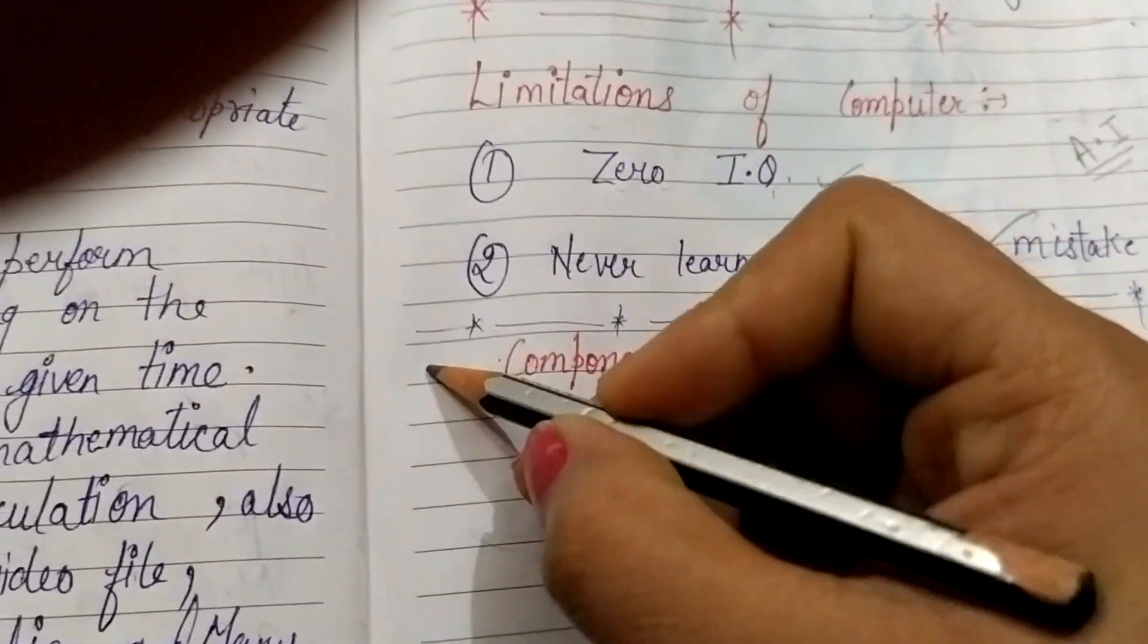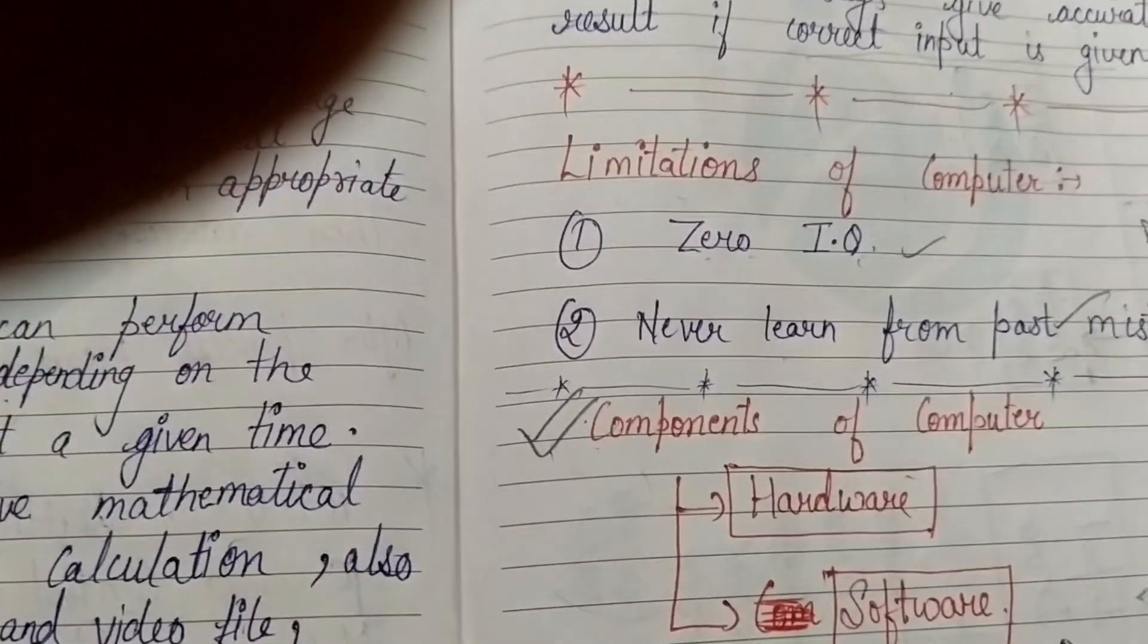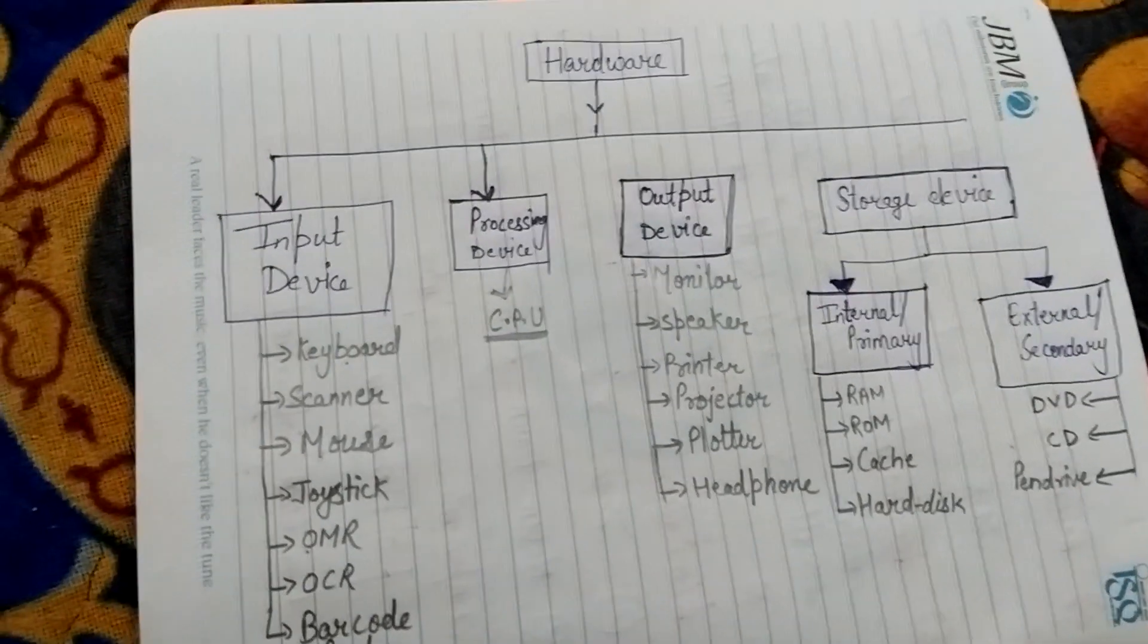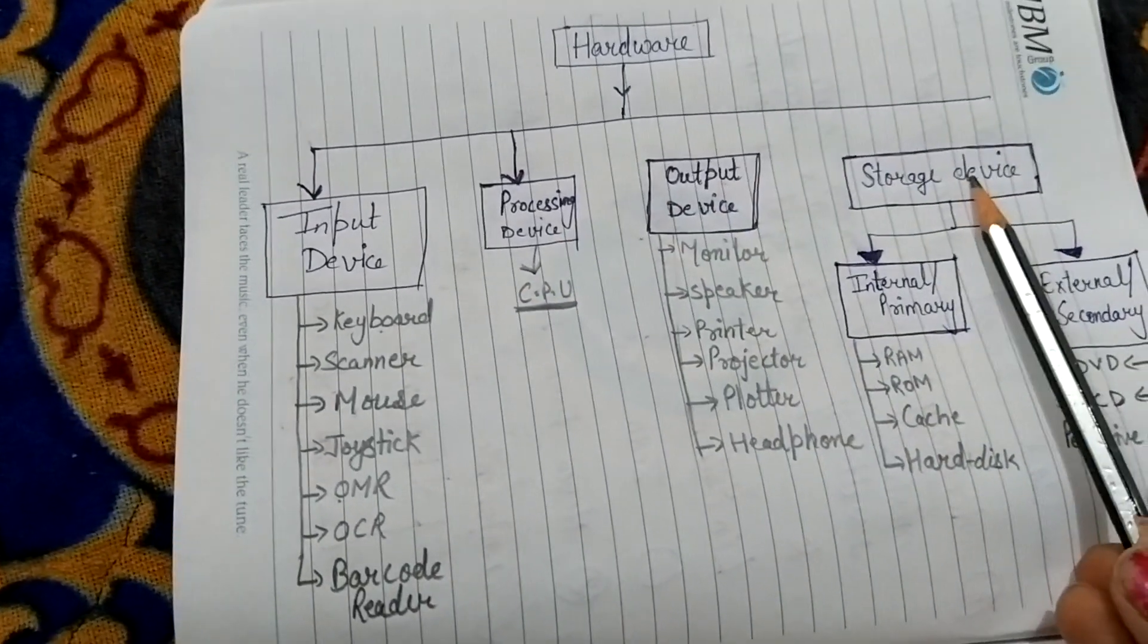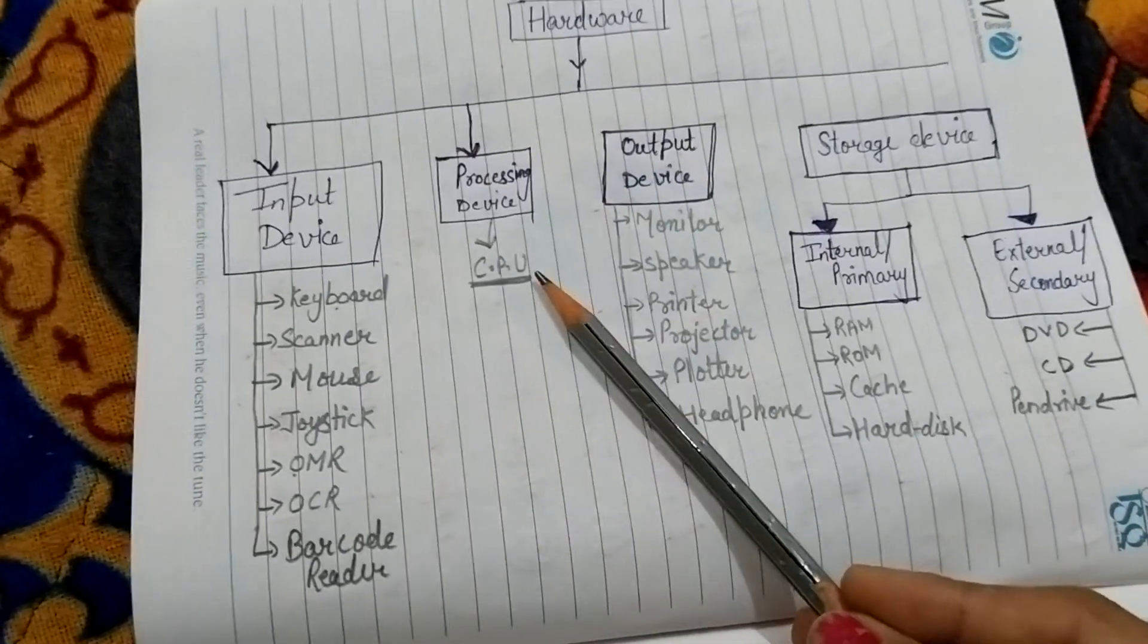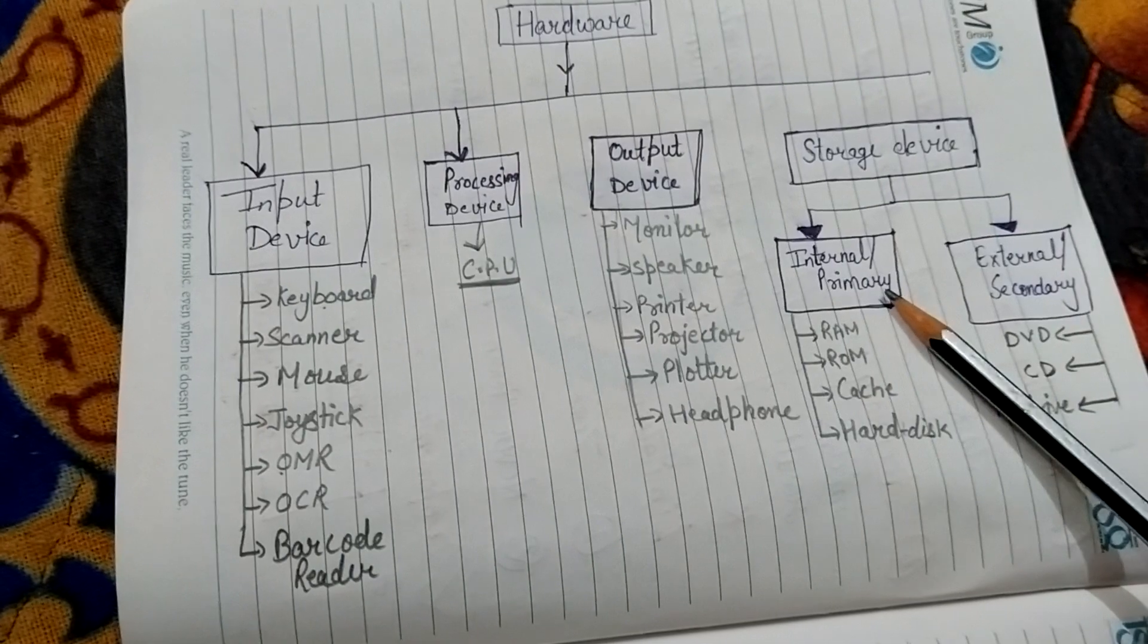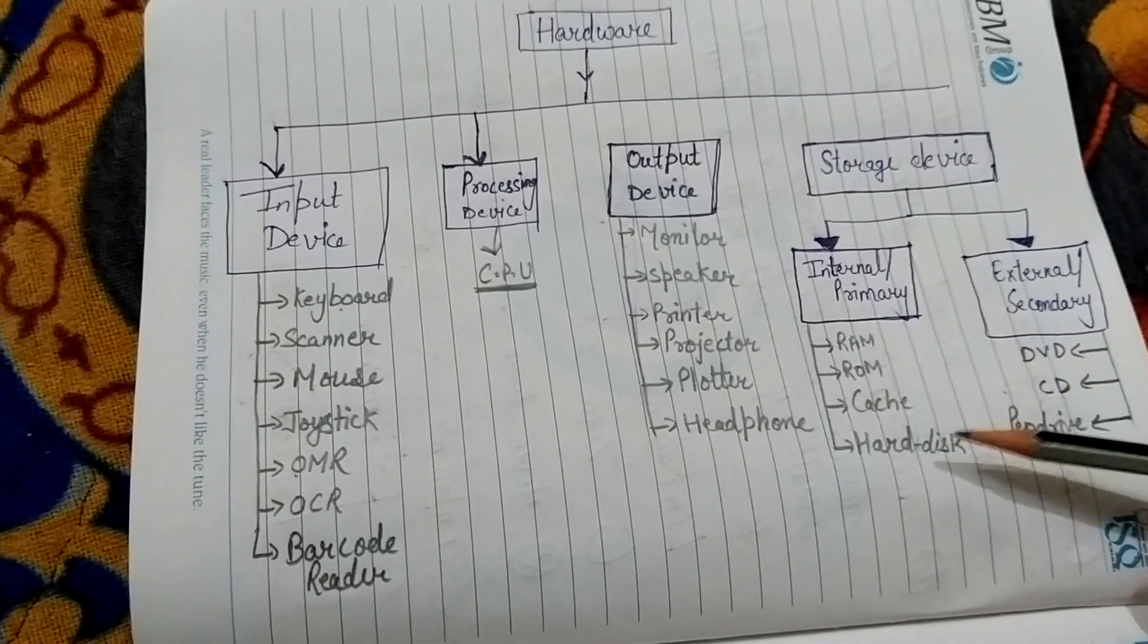You should start this point from the next page: components of computer. Computer has how many components? Hardware and software. In our computer, I will show you hardware parts. Hardware is further divided into four parts: one is your input, processing, output, and storage. For input devices, I have given examples: keyboard, scanner, mouse—these are some examples of input devices. Then processing device, output device—I have provided you examples. Then storage is divided into two types: internal, internal can also be called by another name—primary. Then external, external is also known as secondary. Internal memory part has four parts: RAM, ROM, cache, and hard disk.